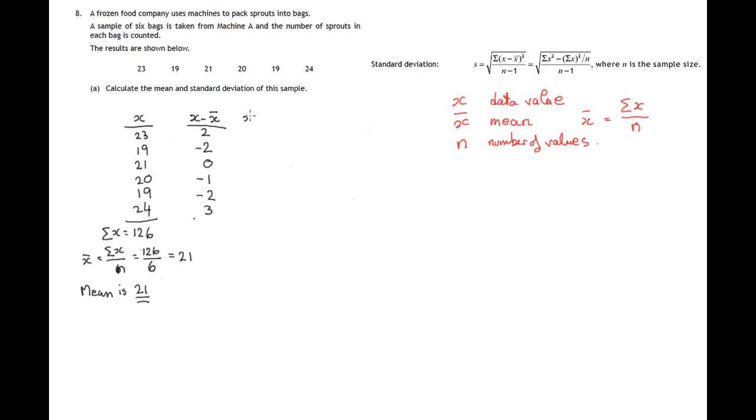We now need the squares of these deviations from the mean. 2 squared is 4, negative 2 times negative 2 is 4. Remember squared numbers are always 0 or positive. We never get a negative number appearing in this column. 0 squared is 0, negative 1 squared is 1, negative 2 squared is 4, 3 squared is 9. So we now need the total of these squared deviations from the mean. So 4 and 4 is 8, 9, 13, 22.